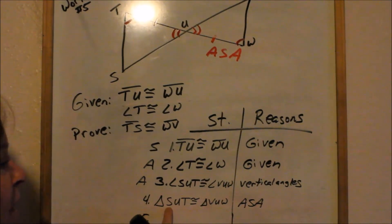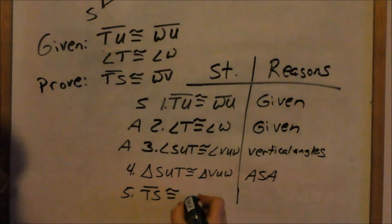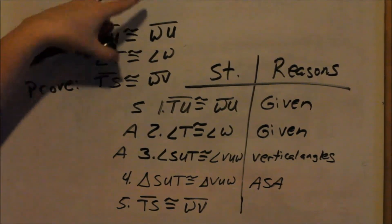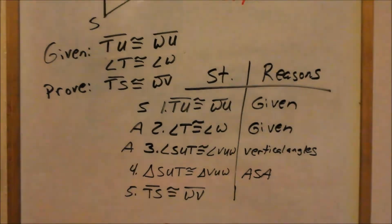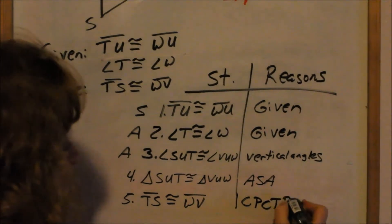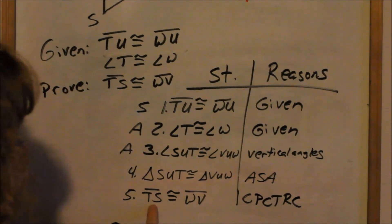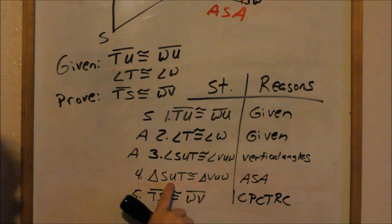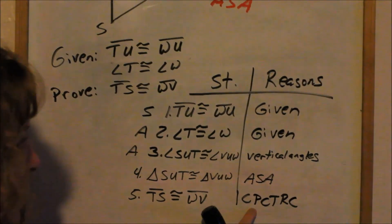So I'm now ready to make the statement that triangle SUT is congruent to triangle VUW — angle-side-angle postulate. But that's not what I'm trying to prove. I must prove the two triangles congruent before I can say that line segment TS is congruent to line segment WV. Now that I've proven the two triangles are congruent, all of the rest of their parts are congruent. So TS is congruent to VW by CPCTRC — corresponding parts of congruent triangles are congruent. You must prove the triangles are congruent before you use CPCTRC.